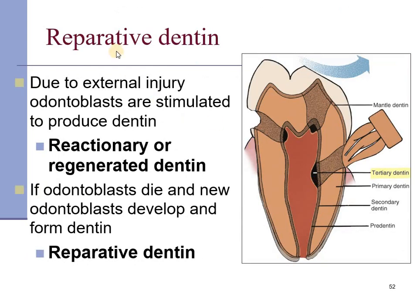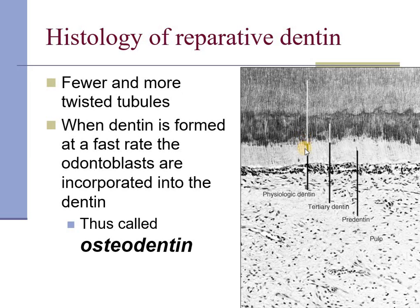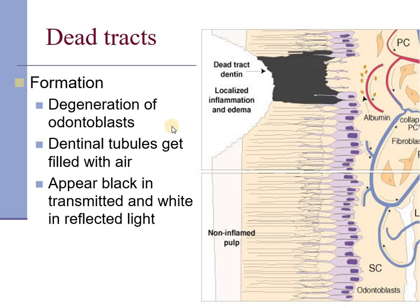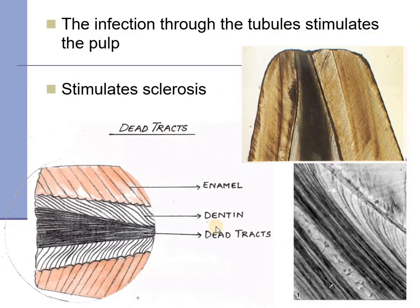Reparative dentine is divided into two types. Reparative dentine proper occurs where the odontoblasts are dead and new odontoblasts develop from undifferentiated cells. When, due to an external injury, the odontoblast is not yet dead but is reacting to the stimulus, it is called reactionary or regenerative dentine. Histologically, tertiary dentine has the same tubular structure but with fewer or twisted tubules. Sometimes the rate of development is so fast that odontoblasts get incorporated into it, forming osteodentine. Dead tracts occur due to degeneration of odontoblasts — the dentinal tubules fill with air and appear black in transmitted light and white in reflected light.